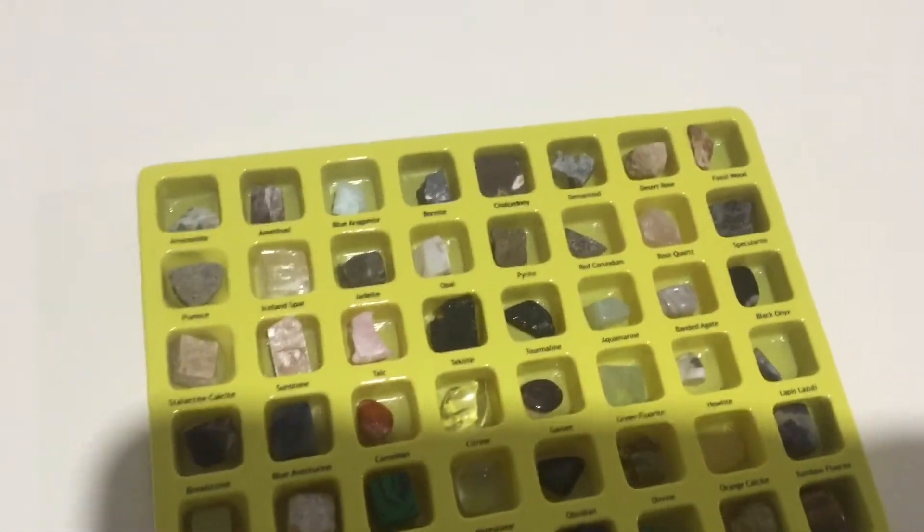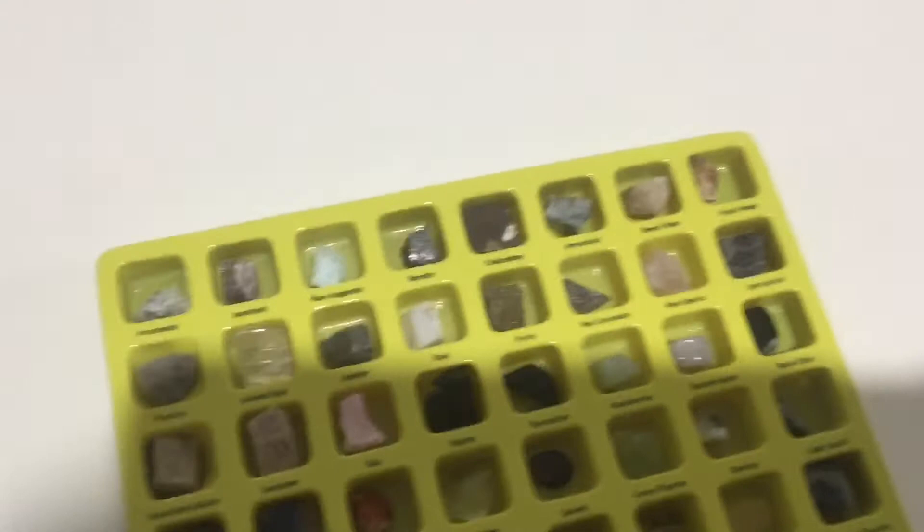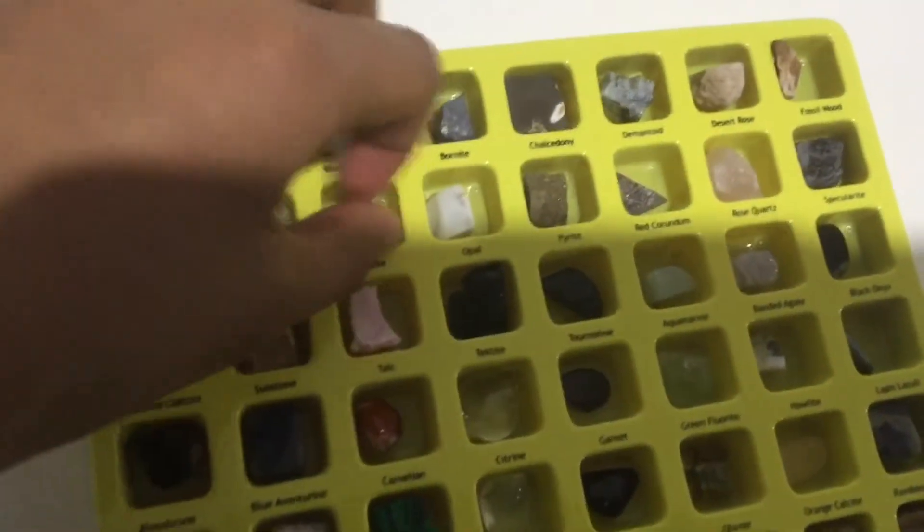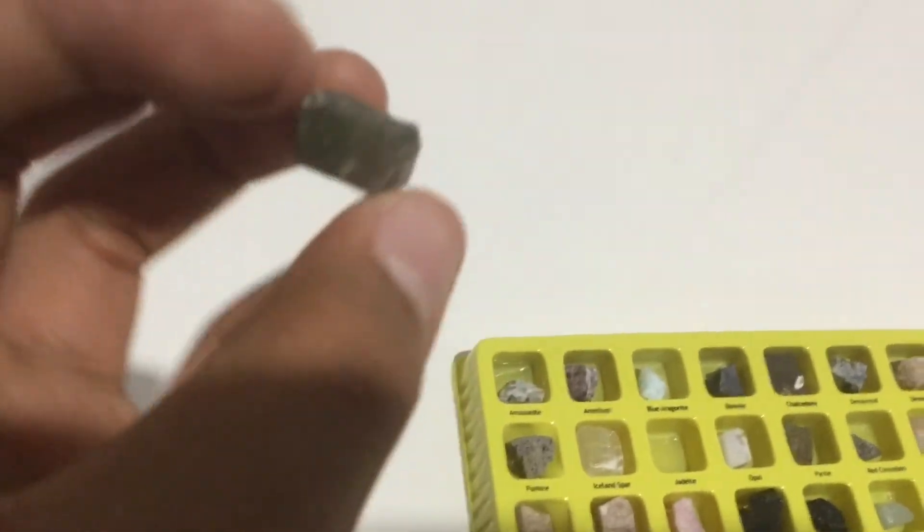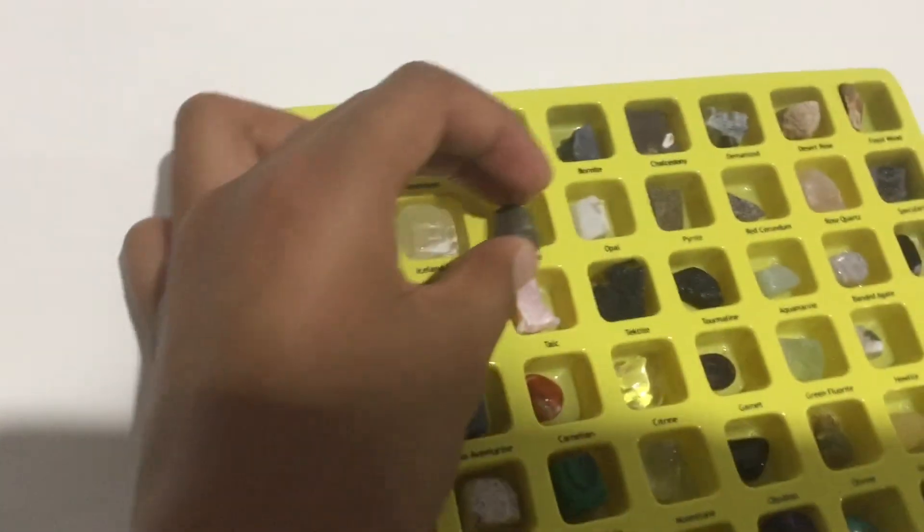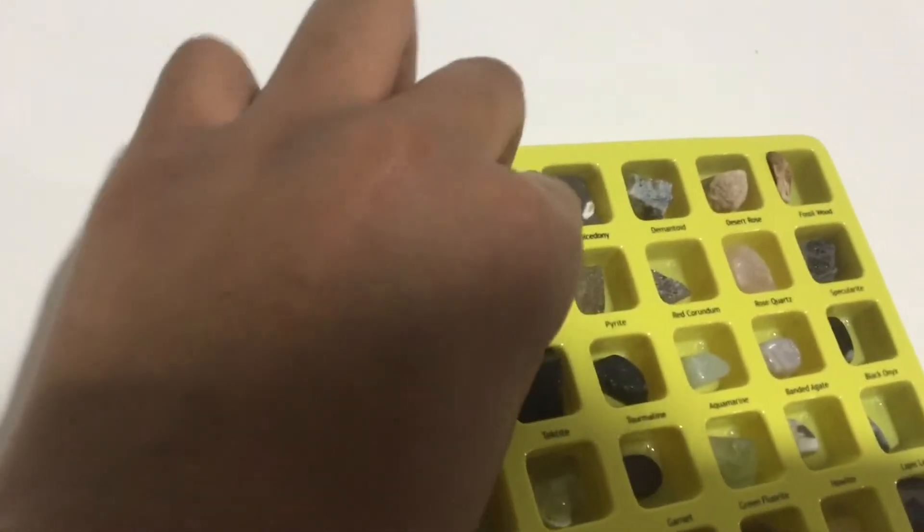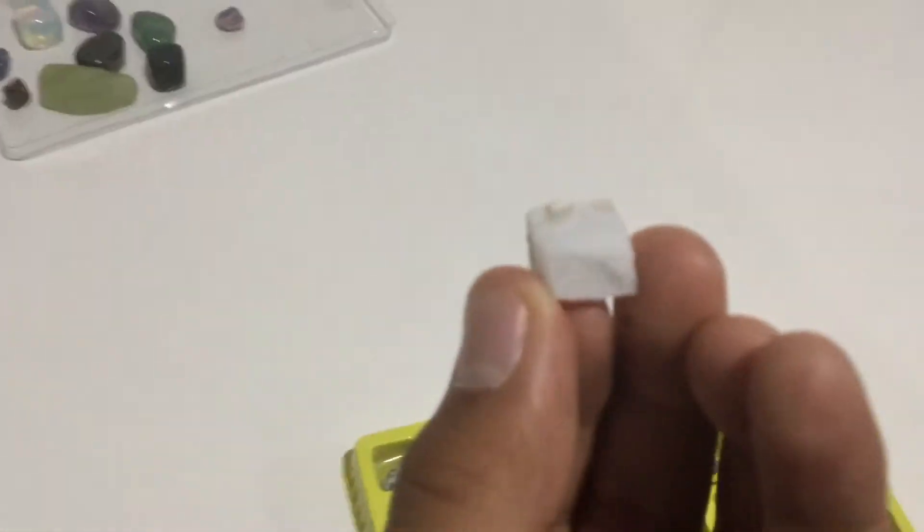Next one is jadeite, which is just the exact same thing, just a bit darker. This one is opal, the same one but just a different type of opal. You can't see through it. Some are polished, the white version which you can't see through.